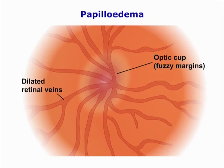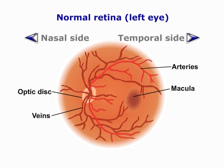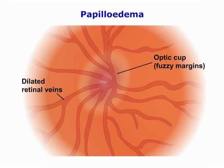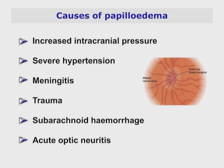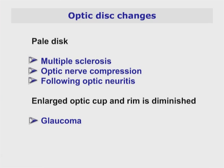Evaluate the size and colour of the optic disc. The margins should be sharp and well defined. Then attempt to identify the optic cup, a white depression located in the centre of the disc from where the blood vessels emerge. The optic disc is normally a creamy pink to yellow-orange colour with clear borders. If the margins are not easy to distinguish, the cup is not visible and there are dilated retinal veins, these may be signs of papilledema, which may be caused by increased intracranial pressure, severe hypertension, meningitis, trauma, subarachnoid hemorrhage, or acute optic neuritis. A pale disc may indicate multiple sclerosis, optic nerve compression, or may occur after optic neuritis. If the cup is enlarged and the rim is diminished, this may be a sign of glaucoma.